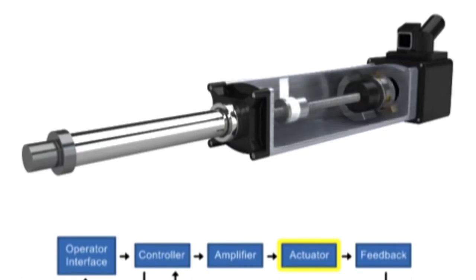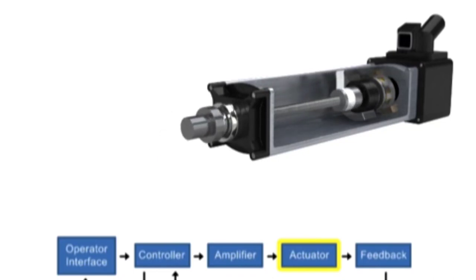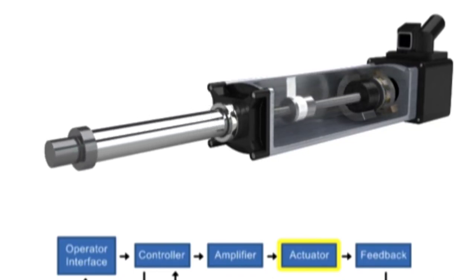Linear actuators used in industrial applications convert rotary motion to linear motion by turning the actuator nut to move the screw in a straight line.